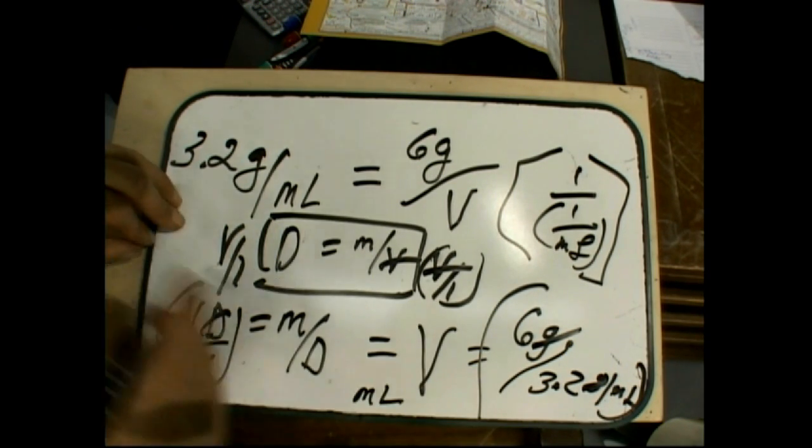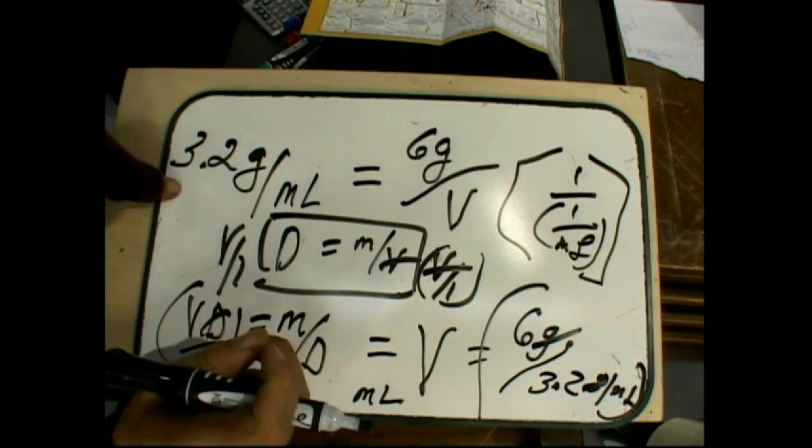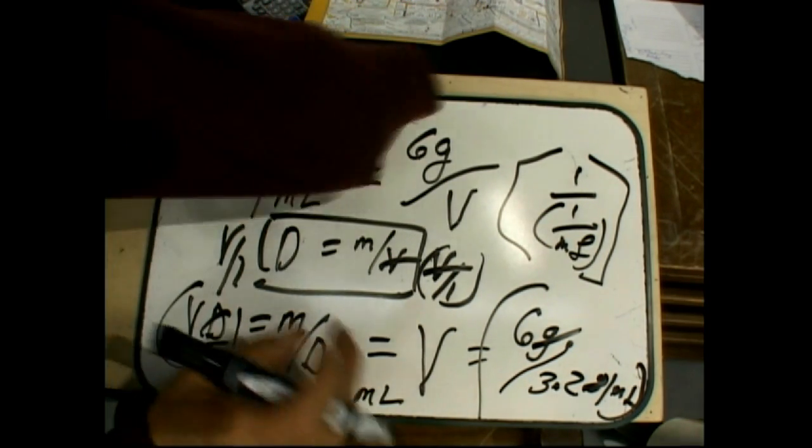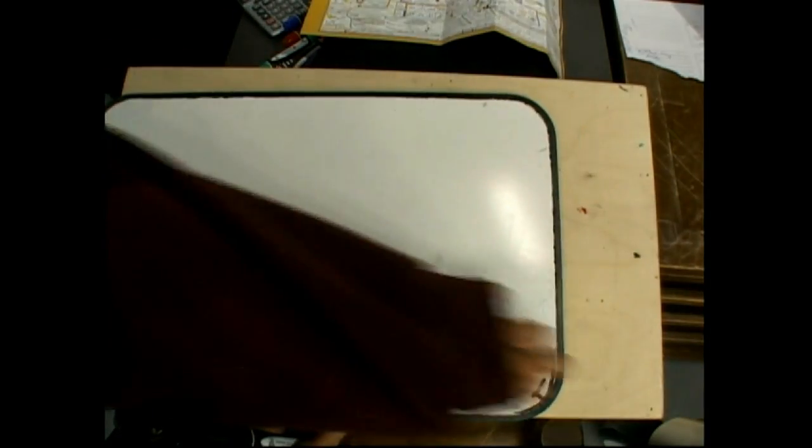So six divided by 3.2 would be what the volume of something with a density of 3.2 grams, if you had a six-gram sample. So that's your third dimension, volume.